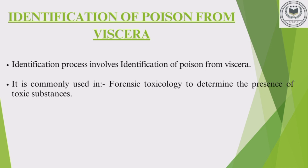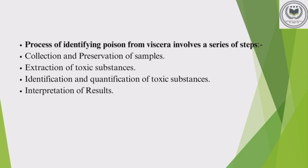Now let's discuss the most important part: identification of poison. Once the extraction and isolation of poisons from viscera has been done, identification is the next critical process, as further investigation and precautions will be based on the substance identified. It is commonly used in forensic toxicology to determine the presence of toxic substances. The process involves a series of steps: collection and preservation of samples, extraction of toxic substances, identification and quantification of toxic substances, and most importantly, the interpretation of results.